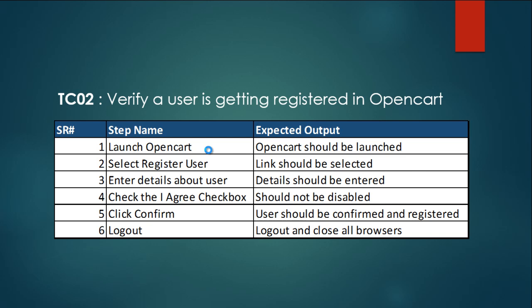To briefly summarize into a manual test case, this is how it would look: verify a user is getting registered once all details are entered. Step one: launch your OpenCart web URL. Step two: select your registered user. Step three: enter the details about the user. Step four: check the 'I agree' checkbox, click Confirm, click Logout, and close all browsers.